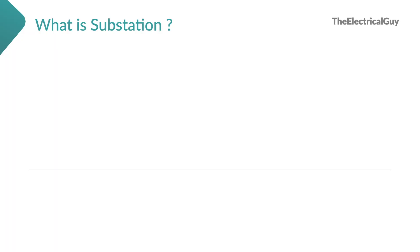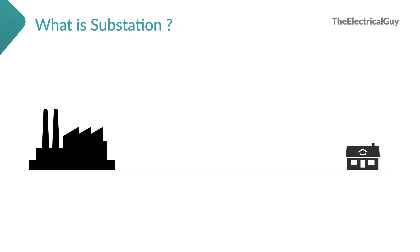Let's start with what is a substation. We know that power is generated in a power station which is far, far away from its ultimate end user. There are multiple reasons for that — the major one is of course pollution. Traditional plants like thermal power plants create a lot of pollution, so they have to be away from the city and village. Also, they should be near to the fuel source like coal, so they will try to build the power station near to a coal mine. That is the reason why power stations are very, very far from the ultimate end user.